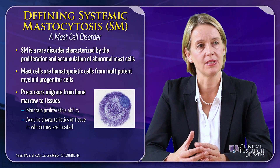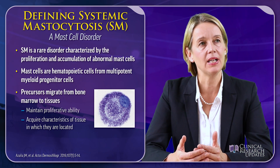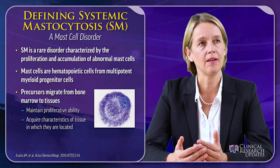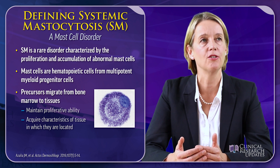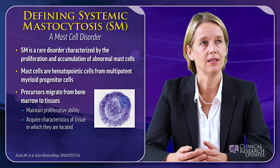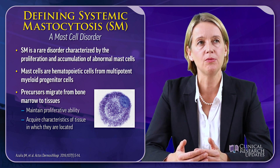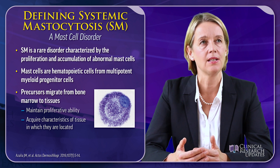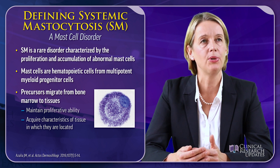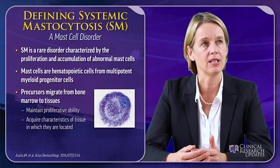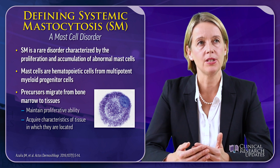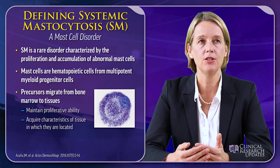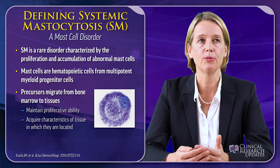Systemic mastocytosis is a rare disease characterized by a pathologic accumulation of mast cells. Mast cells are hematopoietic cells from multipotent myeloid progenitor cells. They migrate as precursors to the tissues from bone marrow.